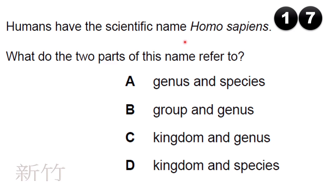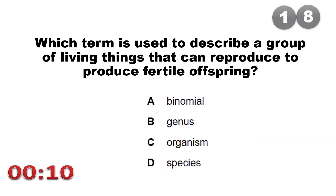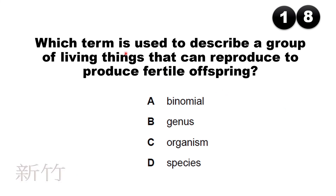Humans have the scientific name Homo sapiens. What do the two parts of this name refer to? Homo means genus and sapiens means species. Additionally, a species is defined as a group of living things that can reproduce to produce fertile offspring.